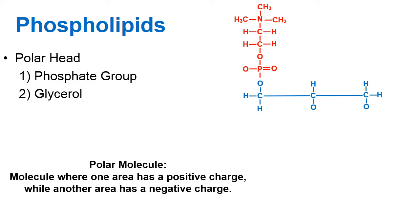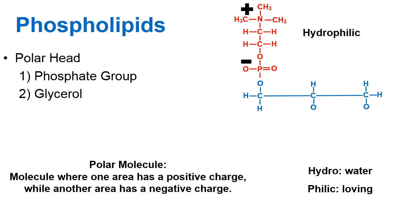Polar molecules are molecules where one area is slightly positive and another area is slightly negative. It turns out that by the nitrogen the phosphate group tends to have a positive charge, and down by the oxygens it tends to have a negative charge — this is why the head is polar. As a result, the head is said to be hydrophilic. Breaking apart the word: 'hydro' implies water, and 'philic' means loving. So the head is water-loving — it will seek out water, which will be important when we get into the full cell membrane.